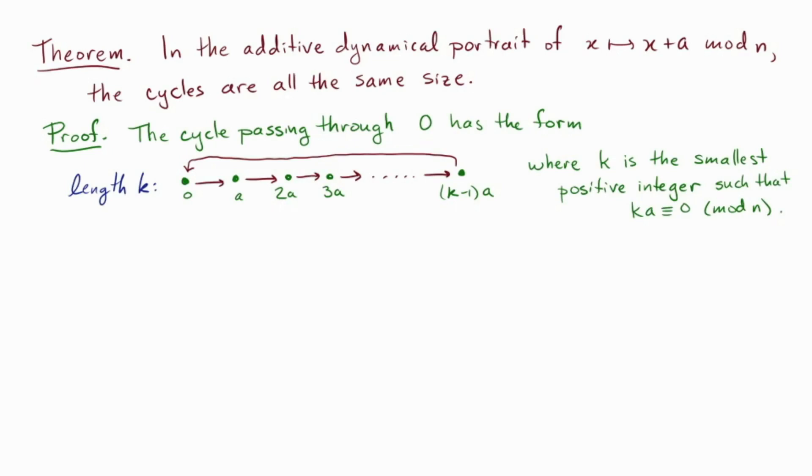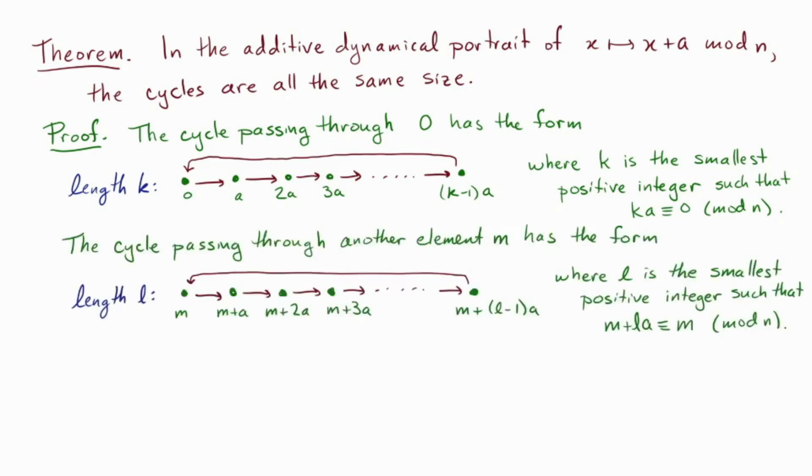Okay, but the integer k here, which gives the length, is determined by the property that it's the smallest positive integer such that ka is congruent to zero modulo n. Now suppose we consider another cycle passing through some other element m, and having length l. Then it looks like this, it goes m to m plus a, m plus 2a, and so on, and back. Okay, and the integer l is characterized by being the smallest positive integer such that m + la is congruent to m mod n, because that's exactly the condition that you're repeating, that you hit the beginning again. All right, so there's our two cycles. But notice that these two conditions here differ just by subtracting an m from both sides. They're actually the same condition. So the defining condition for k and l are equivalent, and so k is equal to l, and we are done.